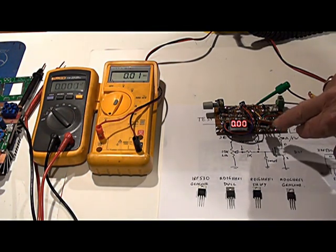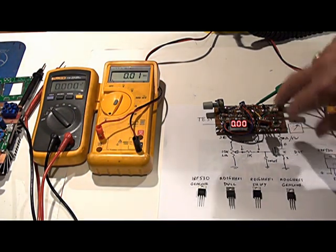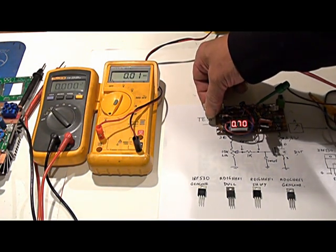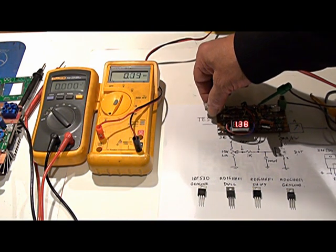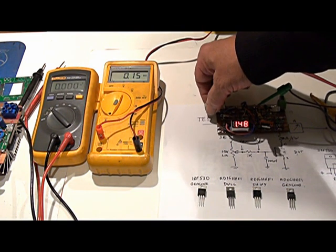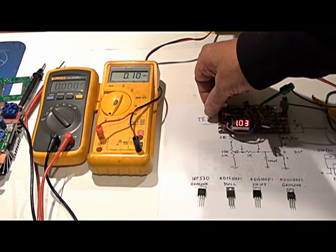For example, I've got an IRF530 in here at the moment. So as I vary the bias voltage, you'll see the current go up. It'll rise and then what I did was plot the voltage against the drain current.